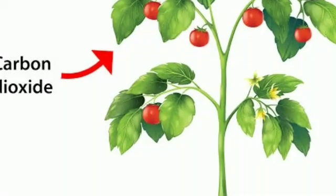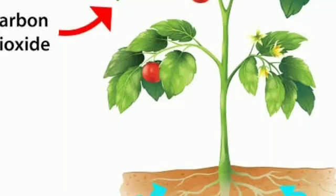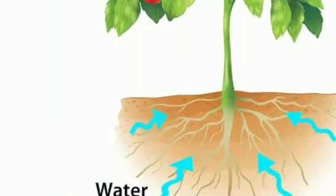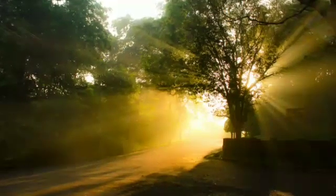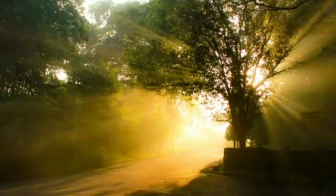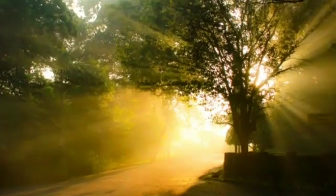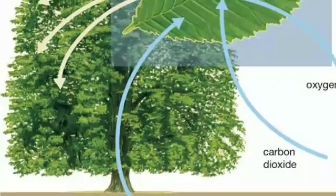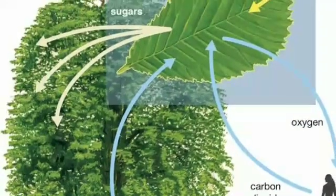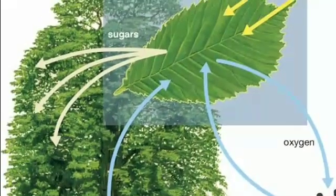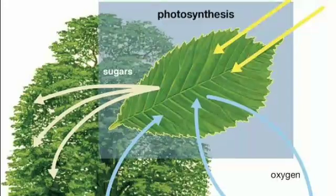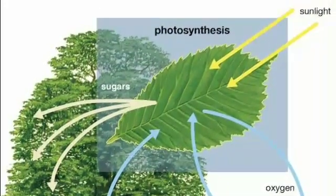What are the things essential for photosynthesis? The main two things are carbon dioxide and water. How do plants get carbon dioxide? Carbon dioxide is present in the atmosphere, so plants can absorb it from the atmosphere. How? There are small pores in their leaves. Plants absorb carbon dioxide from the atmosphere through the stomata.